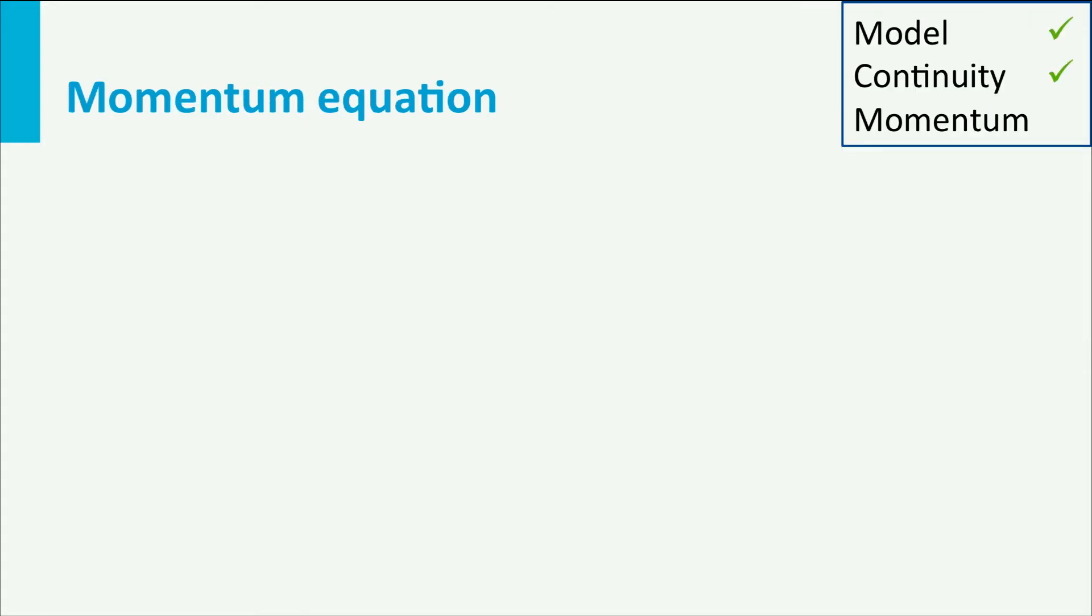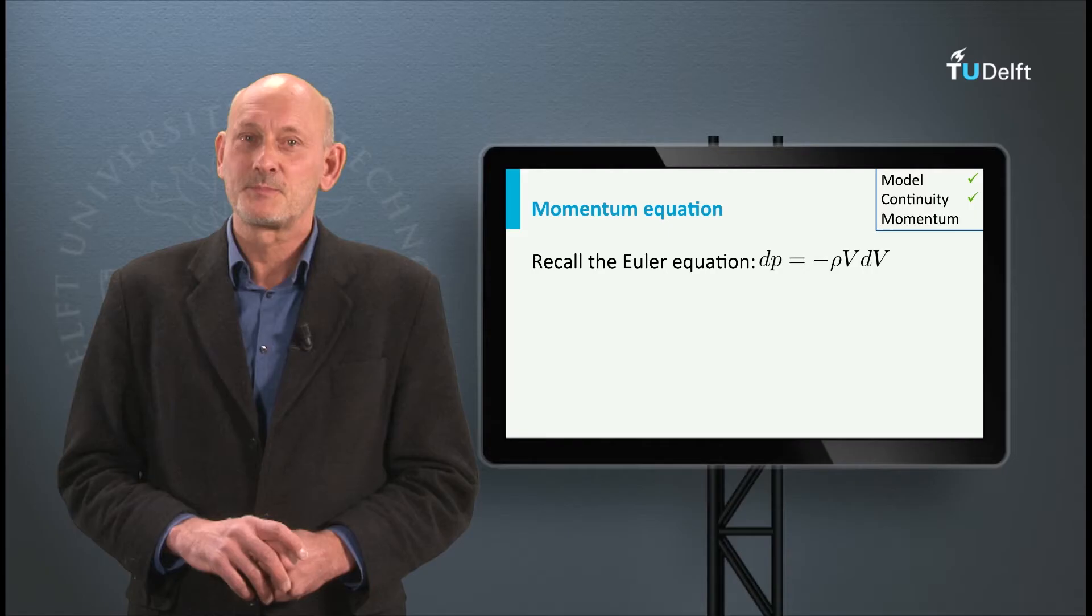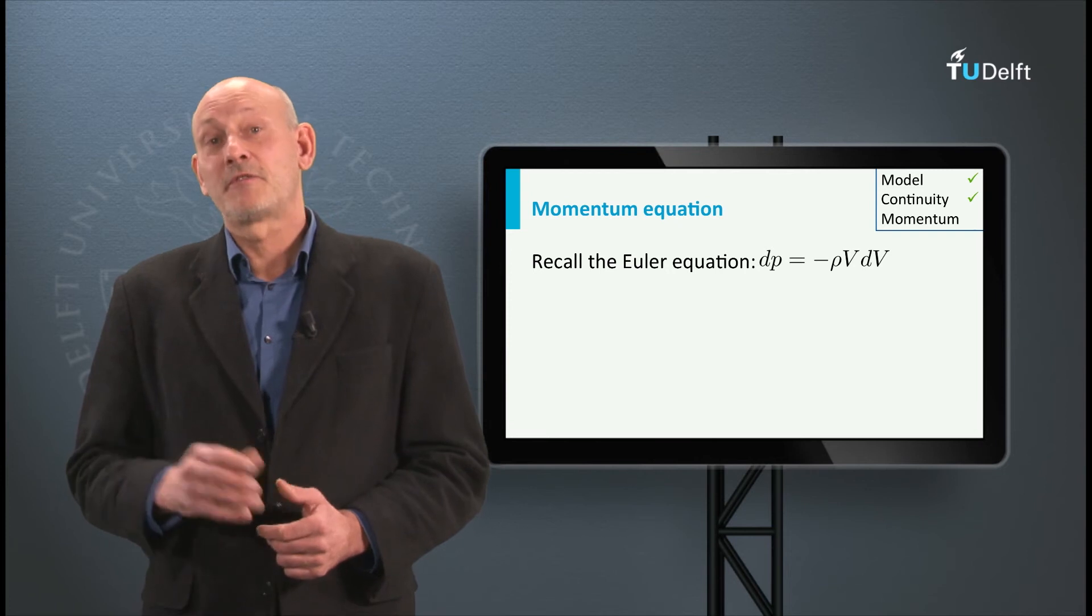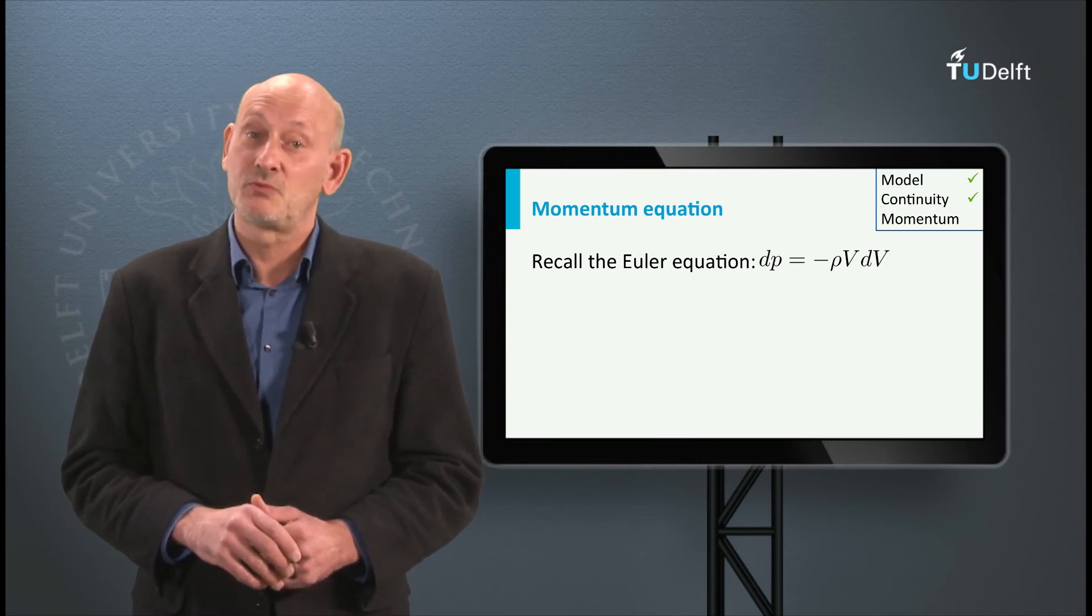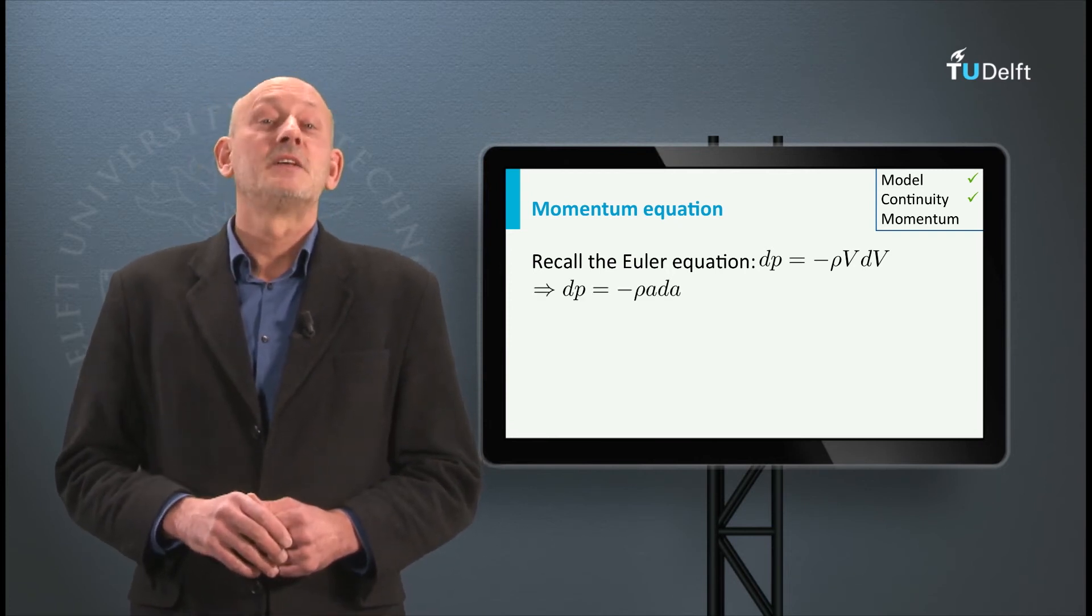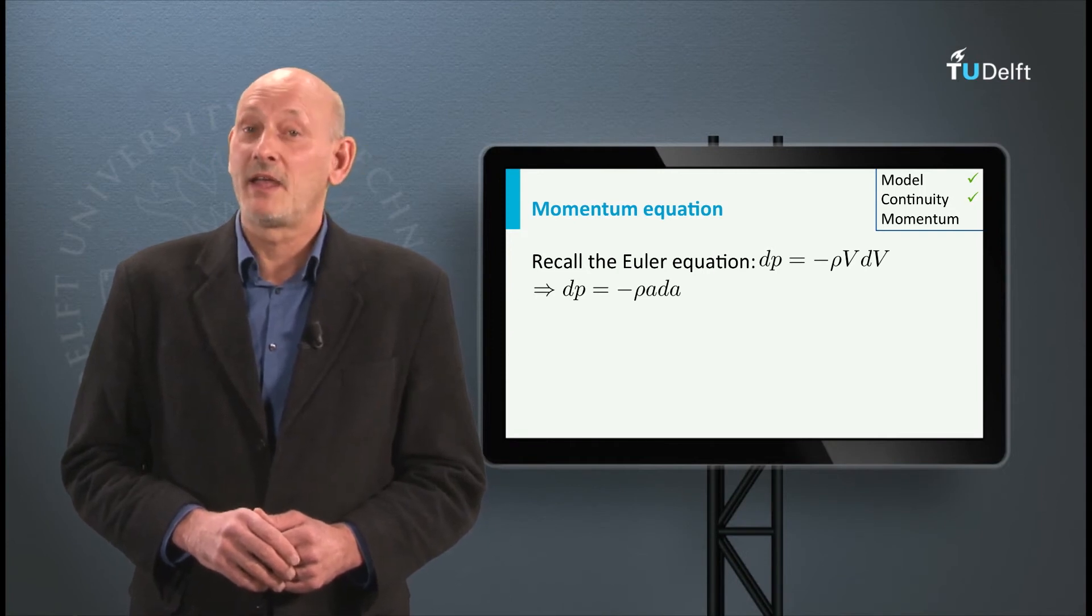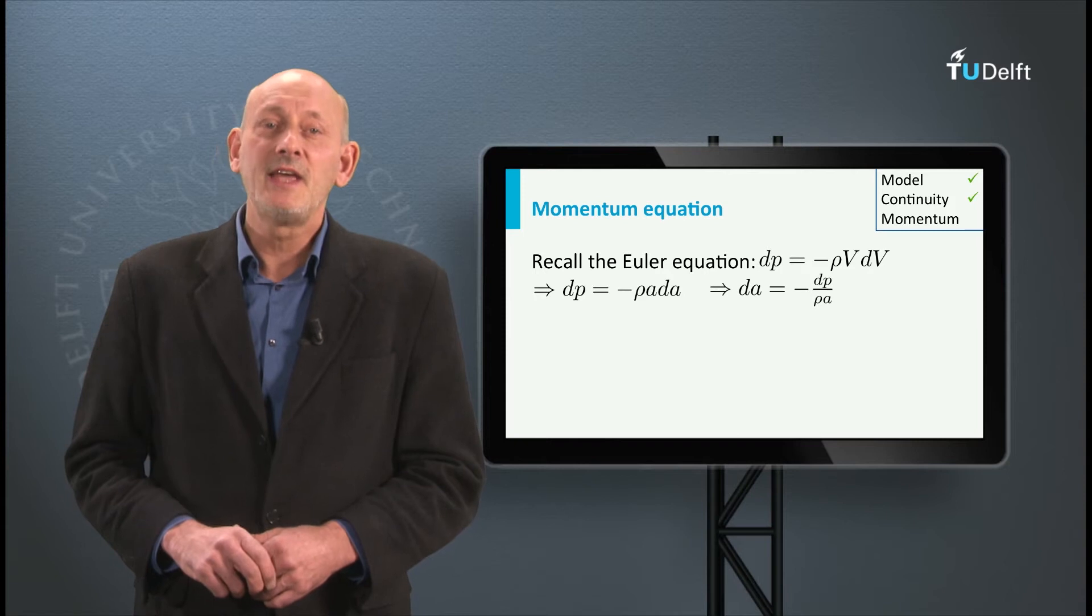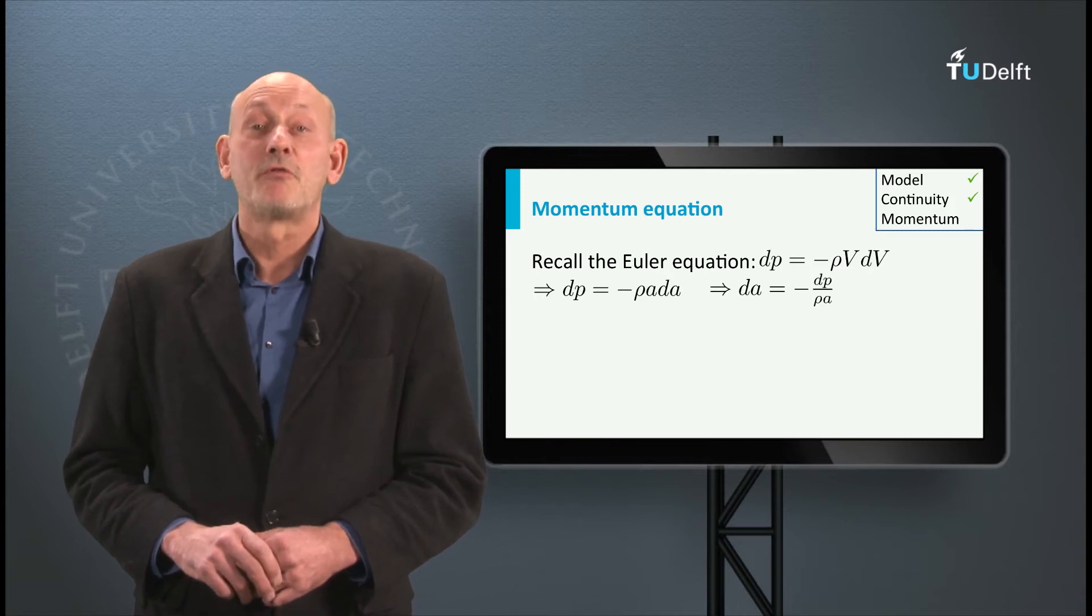Now, in a previous lecture we derived the Euler equation, remember, so dP is minus rho V dV, and it is also valid for compressible flow. Written in the notation of the present situation, where V is equal to the speed of the sound wave A, we find dP is minus rho A dA. Or, written a little differently, dA is minus dP over rho A.